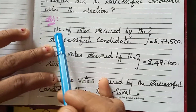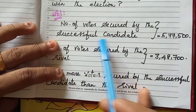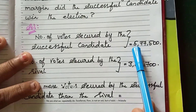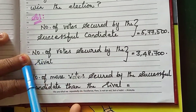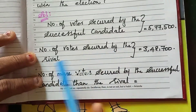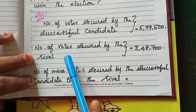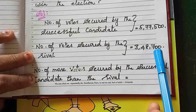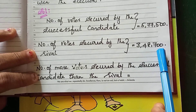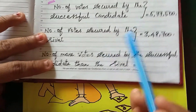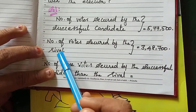The solution: number of votes secured by the successful candidate equals 5,77,500. Next, number of votes secured by the rival — the rival meaning the opponent party — that person scored 3,48,700 votes. We are going to find out how many more votes the successful candidate got compared to the rival.